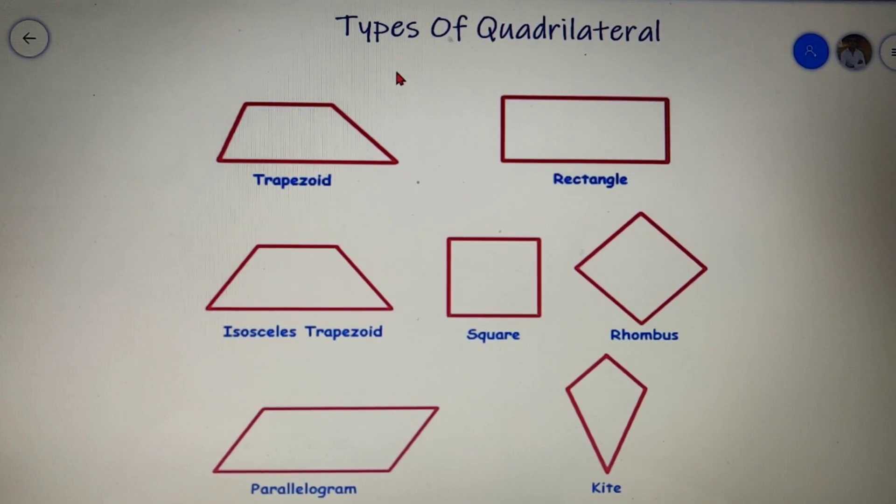Our next topic is types of quadrilateral. Now we have seven different types of quadrilateral which are a trapezoid, rectangle, isosceles trapezoid, square, rhombus, a parallelogram and a kite.